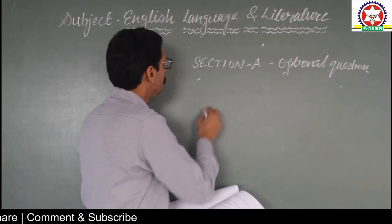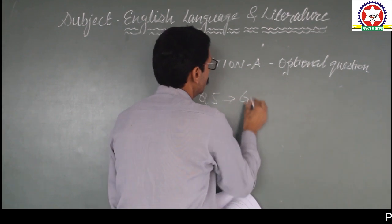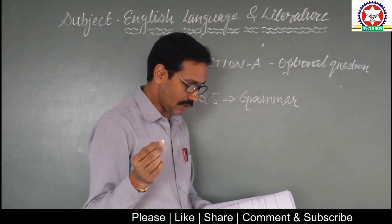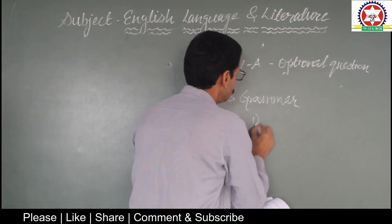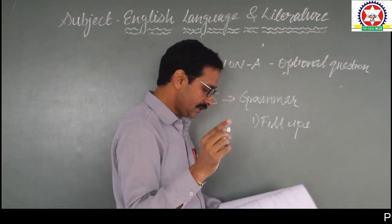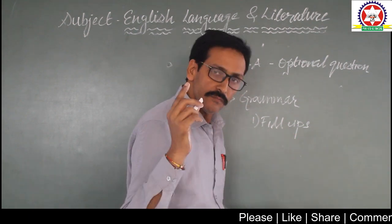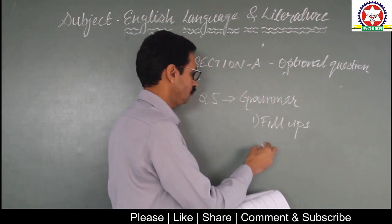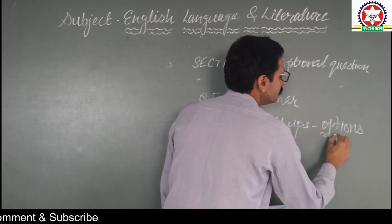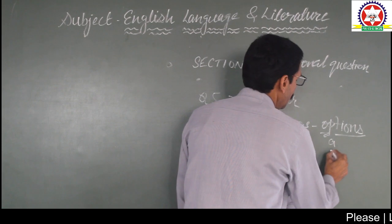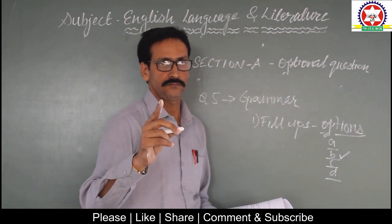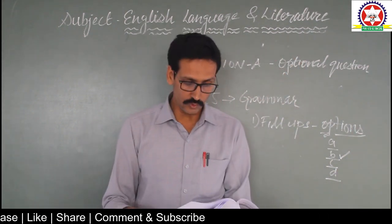Question number 5 is related to grammar. What sort of questions will you get? Fill in the blanks — where you are again going to get four options: A, B, C, D. You have to choose the correct one. This is what question number 5 is about.